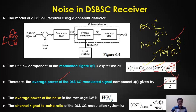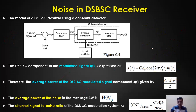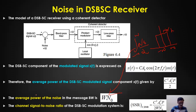The average noise power in the message bandwidth is calculated by integrating the PSD N₀/2 from −W to +W, giving N₀·W. Taking the ratio of the modulated signal power to the noise power, the channel SNR equals c²·Ac²·P / (2·N₀·W).